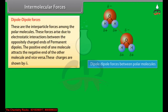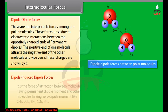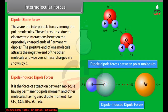Dipole-dipole forces: These are the interparticle forces among polar molecules. These forces arise due to electrostatic interactions between the oppositely charged ends of permanent dipoles. The positive end of one molecule attracts the negative end of the other molecule and vice versa. These charges are shown by delta. Dipole-induced dipole forces: This is the force of attraction between a molecule having permanent dipole moment and other molecules having zero dipole moment, like CH₄, CCl₄, BF₃, SO₃, etc. For example, a polar molecule such as HCl can induce a dipole in an argon atom by distorting its electron cloud. An electrostatic attraction exists between the ion or permanent dipole and the induced dipole. This intermolecular force is called a dipole-induced dipole attraction.